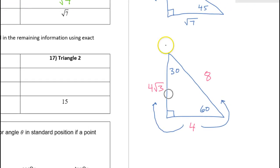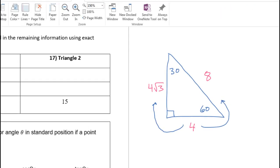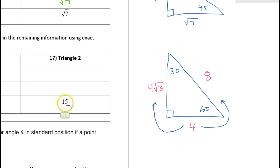Number 17 is slightly trickier because they gave us the long leg and they gave it to us as a whole number. So let's go back to the pattern. We'll use x to represent the short leg. Then the hypotenuse was 2x and the long leg is x radical three.